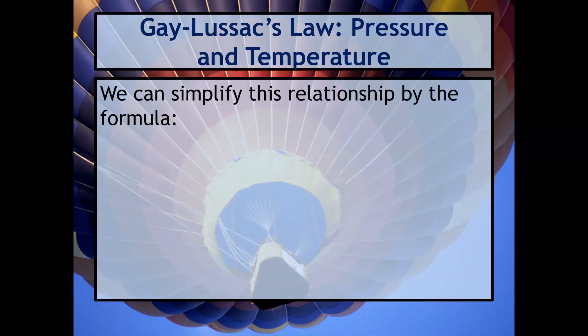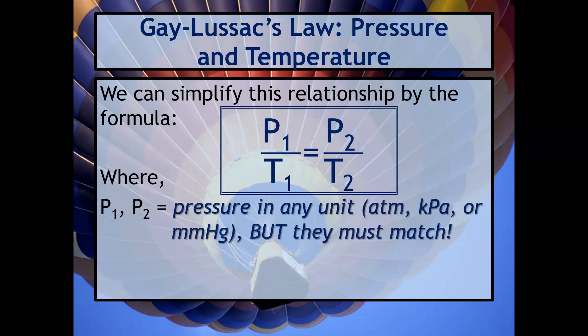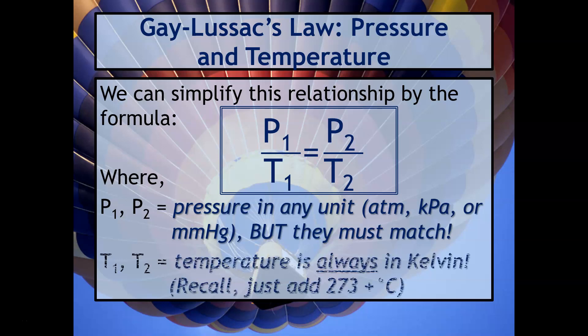We can simplify this relationship with the formula: P1 over T1 equals P2 over T2. P1 and P2 are the pressure in any unit — it could be ATM, kPa, or mmHg — but they must match. T1 and T2 are temperature, and this has to always be in Kelvin. Just add 273 to the degree Celsius temperature.